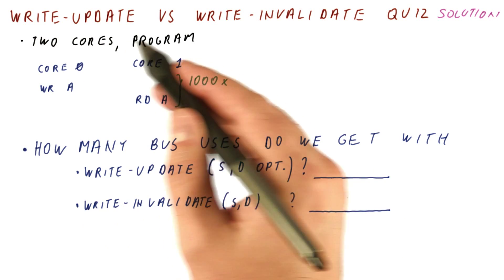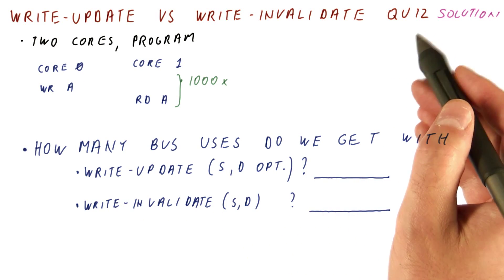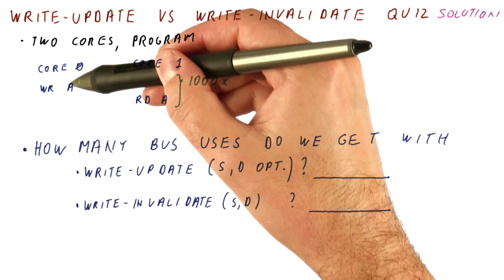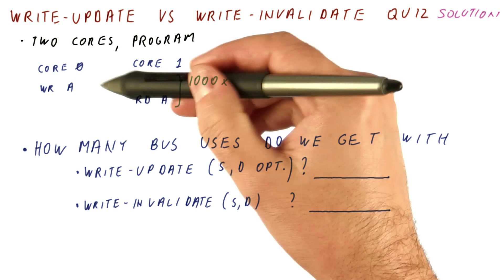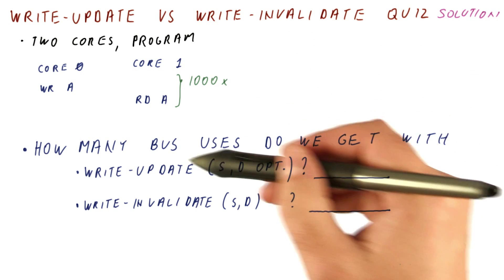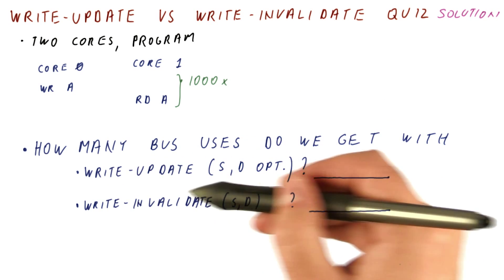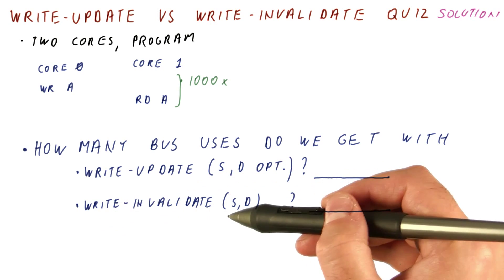Let's see the solution to a write-update versus write-invalidate quiz. We have two cores that run a program where basically core zero writes and then core one reads, and that happens a thousand times. How many bus uses do we get with the write-update protocol and then with the write-invalidate protocol?